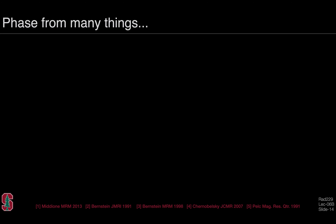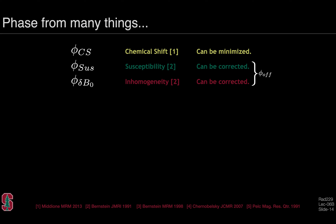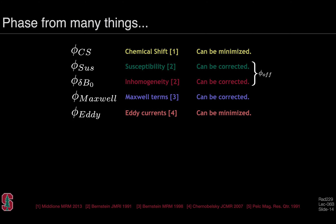The phase in our complex valued signals comes from many things. We can have phase from chemical shift effects, from susceptibility, and from field inhomogeneity. There are different ways to minimize the effects of chemical shift, and susceptibility and inhomogeneity effects — generally referred to as off-resonance effects — can be corrected in a variety of ways. We also learned in the previous lectures about Maxwell terms, which can be corrected, and eddy currents, which can be mitigated using engineering, pulse sequence, or reconstruction approaches.